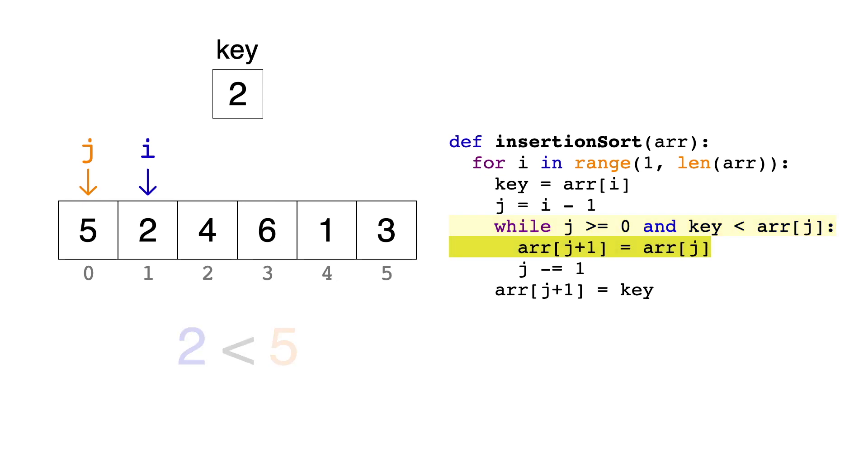The next step is to set the j plus 1th item in the array equal to the jth item, like this. What this is effectively doing is moving up the jth item by 1. Don't worry about the duplicates that you see here because we're about to fix that. Then, we decrement j by 1, so that now j equals negative 1.